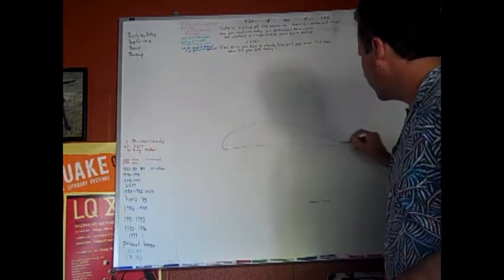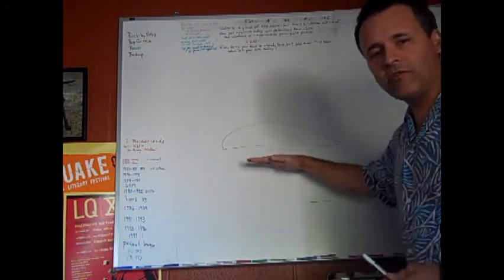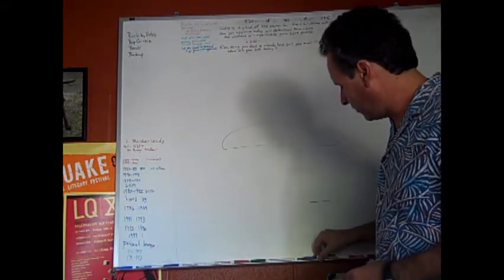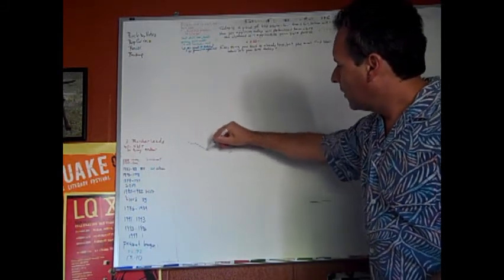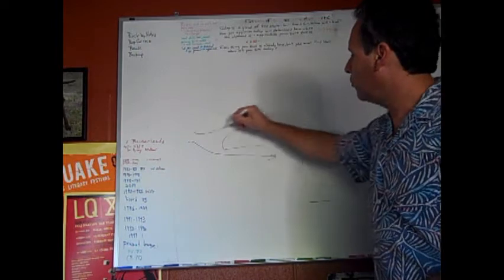It goes back to Bernoulli. So the airfoil on a wing, the cross-section of a wing, is shaped like this. And what that does is that the air that comes on, some of it goes under, some of it goes over the wing.